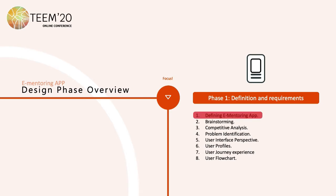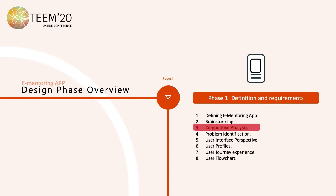Definition: the e-mentoring app is defined as a support tool for university students. Brainstorming: the primary ideas in order to investigate more about mentoring and other apps. Competitive analysis: it was focused on the characteristics of the application, the functionality and the purpose.